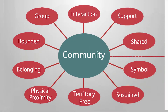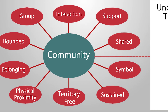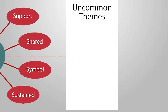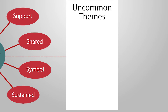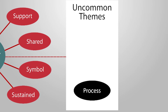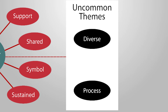The remaining three themes we found were uncommon, meaning they were rarely mentioned in a reported definition of community. The first was process — according to this theme, community is in a constant state of change and it is elastic; it does not just form and stop there. The second uncommon theme was diverse. If we consider Canada as a community, for example, it is very diverse because its citizens are from different backgrounds.